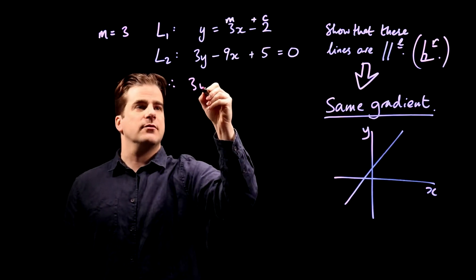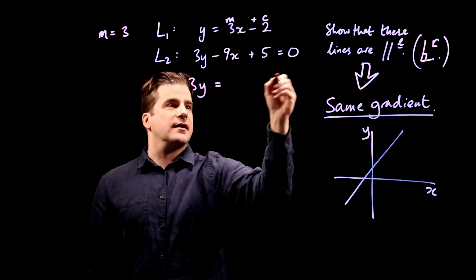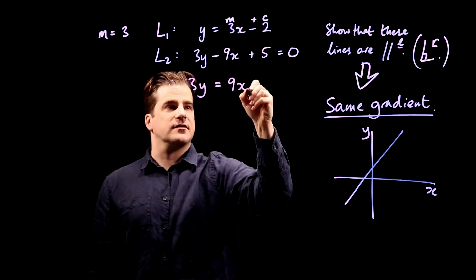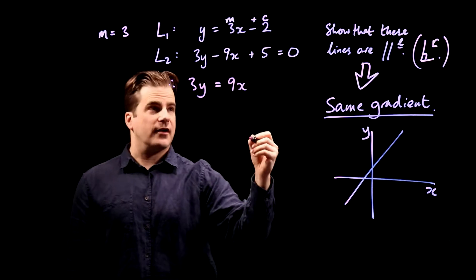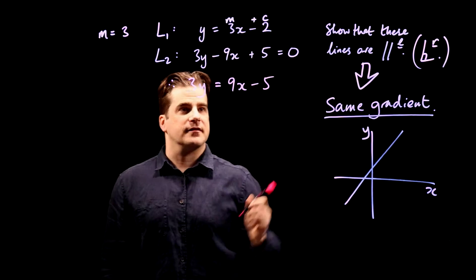So therefore, 3y equals, we're going to add 9x to both sides to get it over there, so it becomes plus 9x on that side. We're going to subtract 5 from both sides, get the 5 over there, so we get minus 5 on that side.